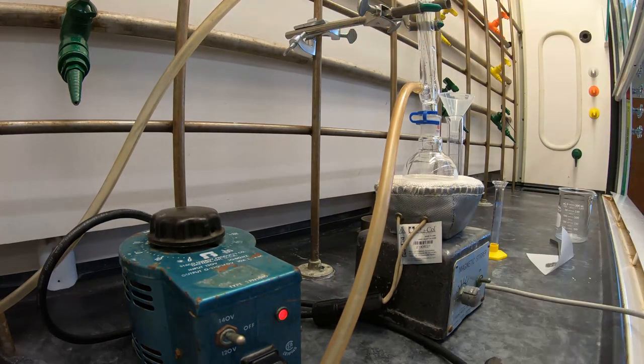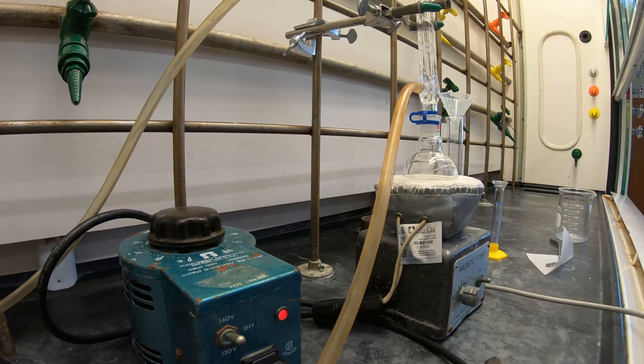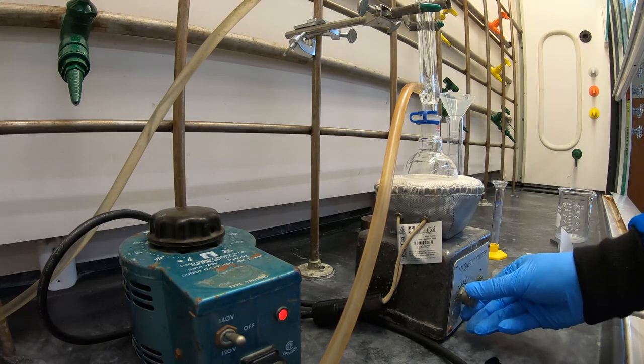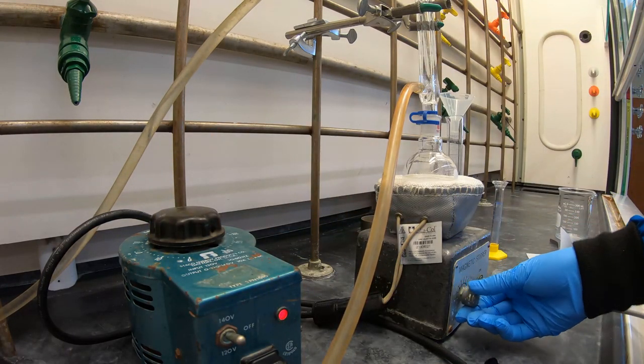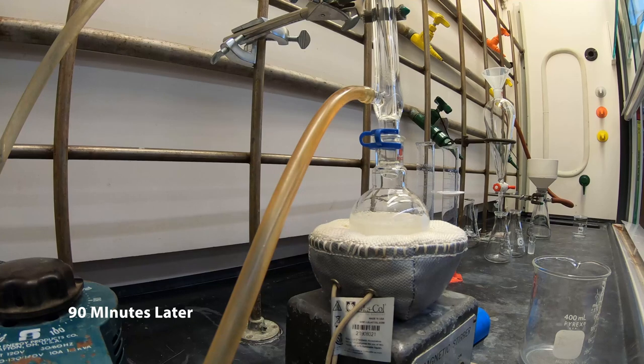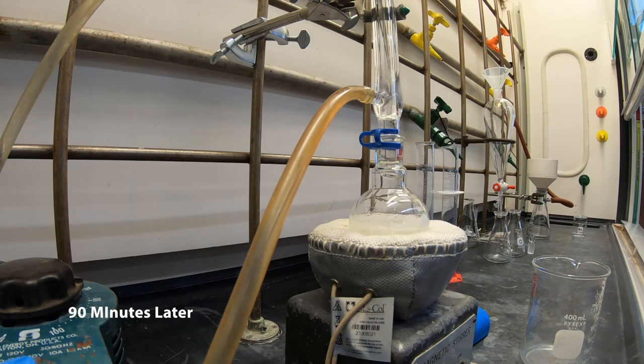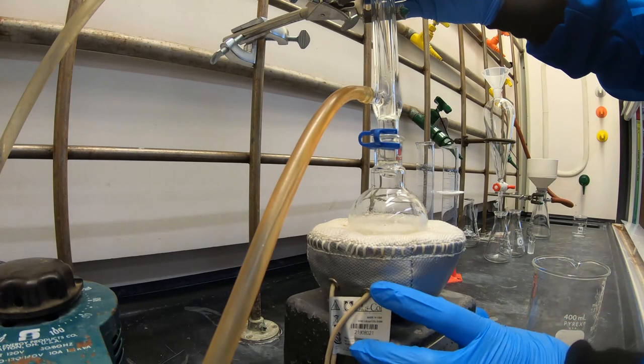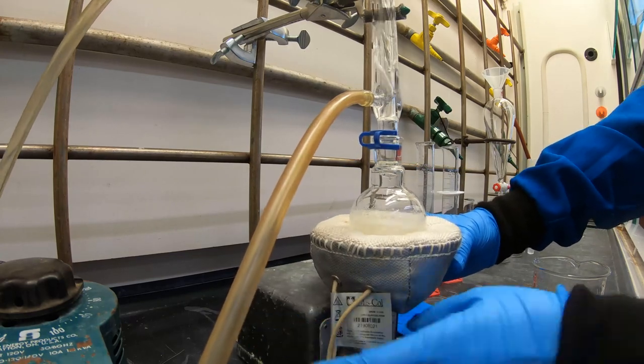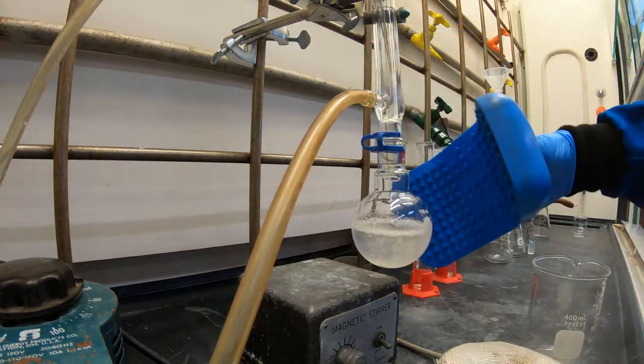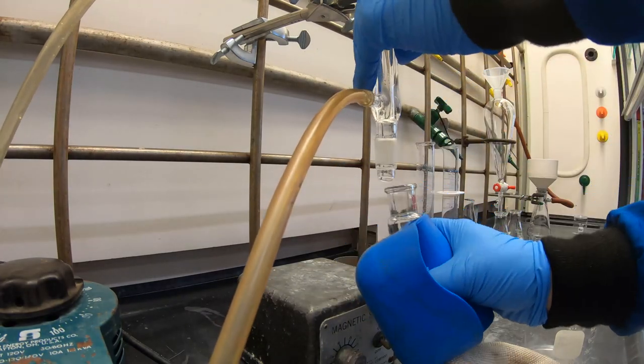Place your reflux system into a preheated heating mantle. You're going to start a vigorous reflux. Once you've reached reflux, allow it to stir for 90 minutes. Remove the heating mantle after 90 minutes and allow the flask to cool down to room temperature.